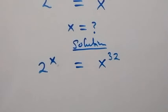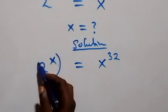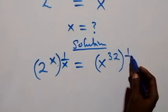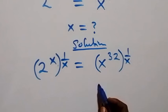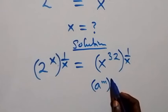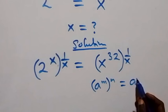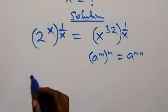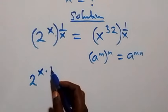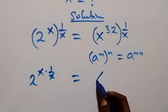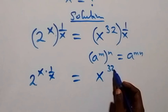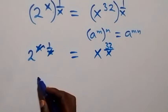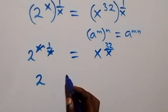Let's raise both sides to power 1 over x. From the law of indices, a raised to power m, raised to power n, equals a raised to power m times n — so the powers multiply. This gives us 2 raised to power x times 1 over x, equals x raised to power 32 over x. The x's cancel and we have 2 raised to power 1, which is 2, equals x raised to power 32 over x.